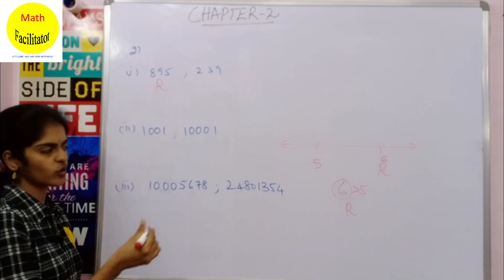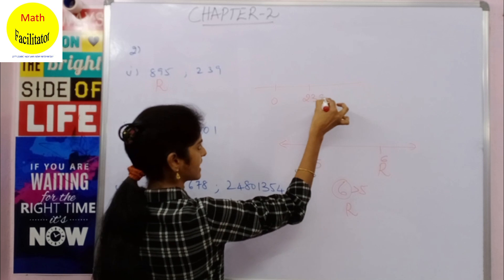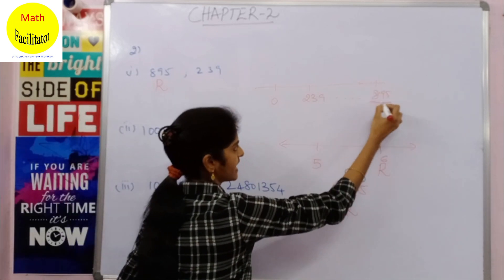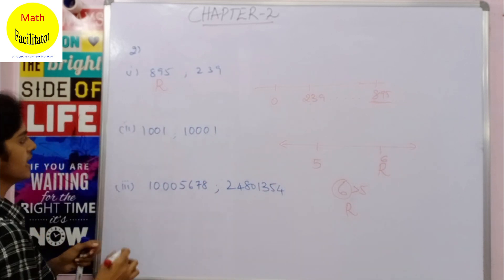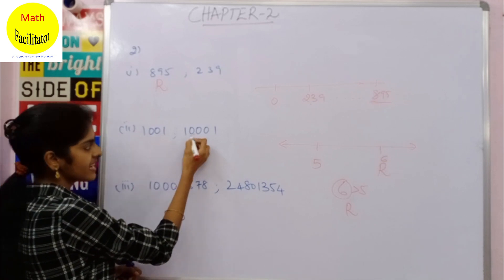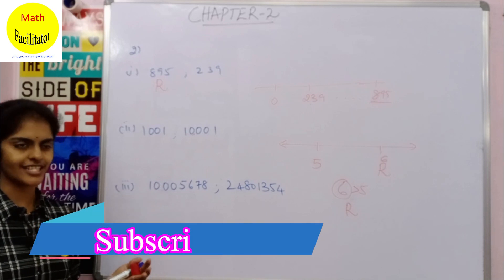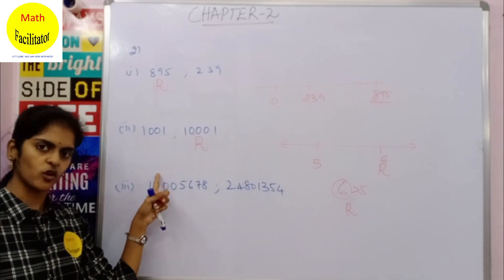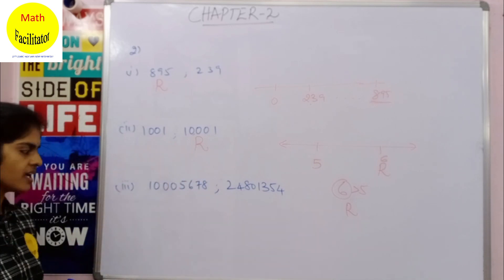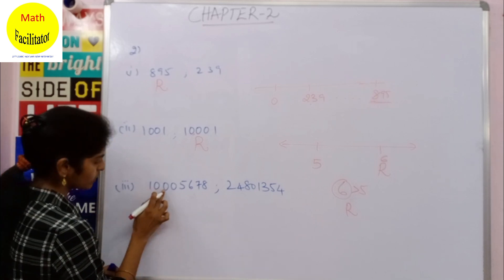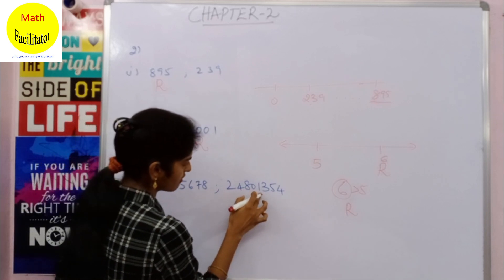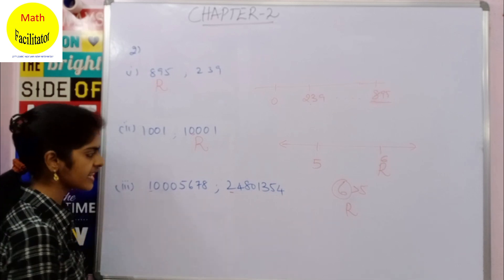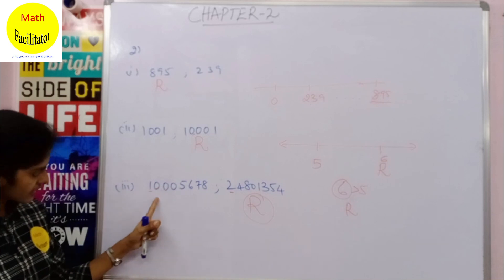Out of 895 and 239, which number is bigger? 895 is bigger, so it lies to the right side of 239. On the number line you get 239 first and then further along you get 895. For the next pair: 1000 and 10,000 — 10,000 is bigger, so 10,000 is to the right side of 1000. For the last pair, both have 8 digits each; comparing the first digit, one number has 1 and the other has 2, so the number with 2 as its first digit is bigger and is to the right.